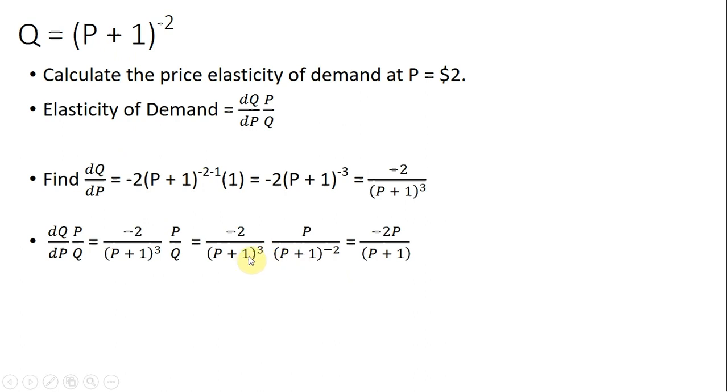Then these two terms right here in the denominator will just collapse to p plus 1, just adding up the exponents. And then minus 2 times p is just minus 2p.